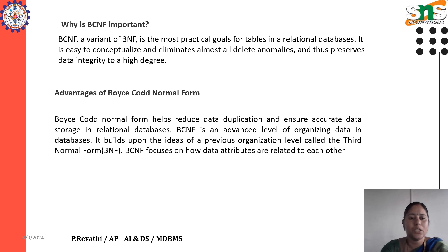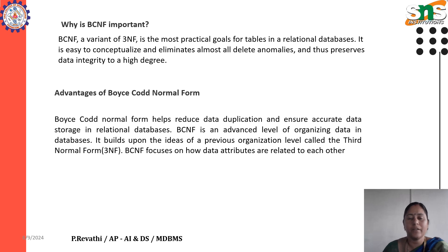Advantages of Boyce-Codd Normal Form: it helps reduce data duplication and ensures accurate data storage in relational databases. It is an advanced level of organizing data in databases, building upon the ideas of the third normal form. Boyce-Codd Normal Form focuses on how data attributes are related to each other.